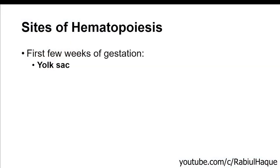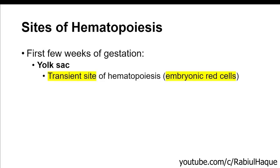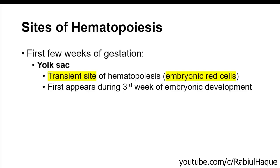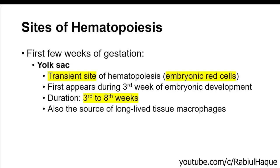During the first few weeks of gestation, yolk sac is the transient site of hematopoiesis. It is transient because after a few weeks, blood cell formation will stop in the yolk sac. Not all types of blood cells are formed there — mainly embryonic red cells are produced in this location. This first appears during the third week of embryonic development. The duration of this mesoblastic stage is from the third week to the eighth week of intrauterine life. Importantly, yolk sac is also the source of long-lived tissue macrophages such as microglial cells in the nervous system and Kupffer cells in the liver.